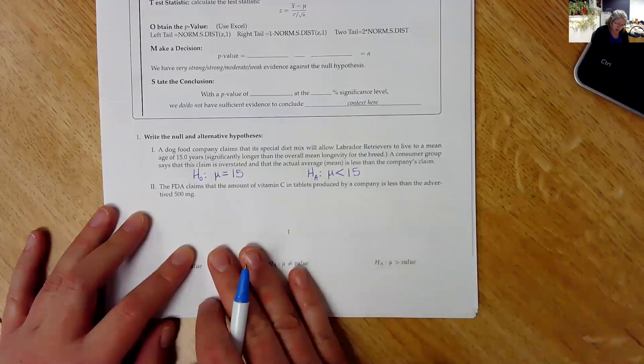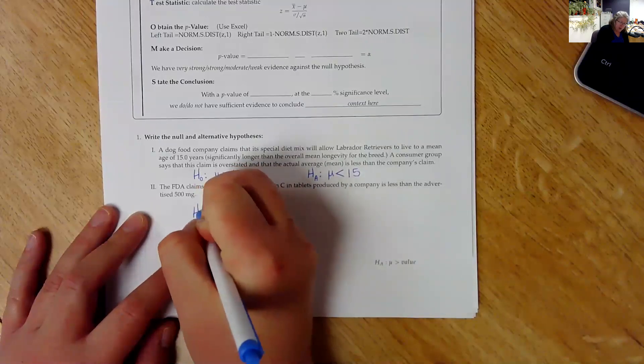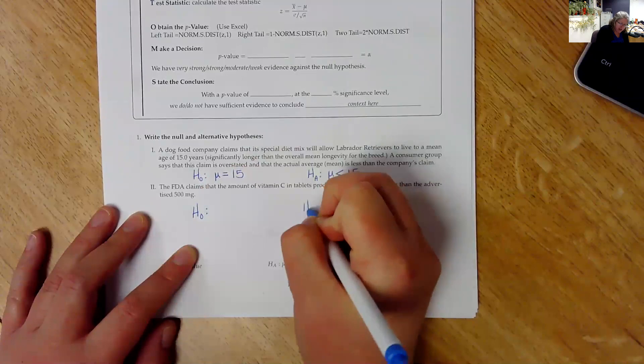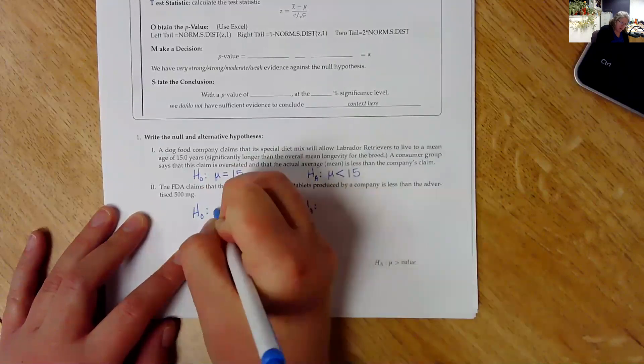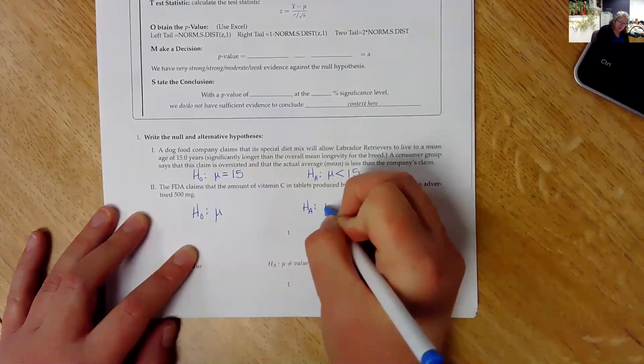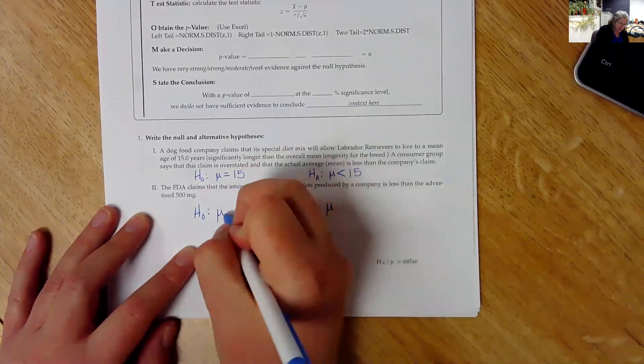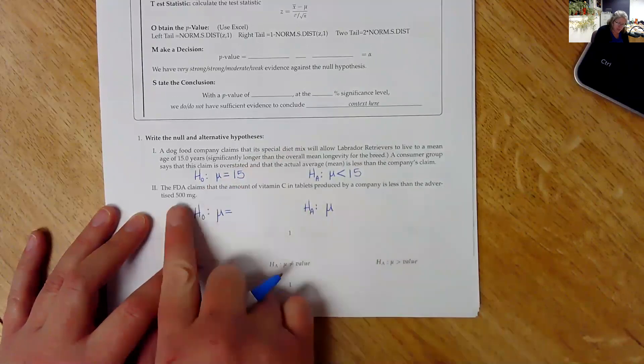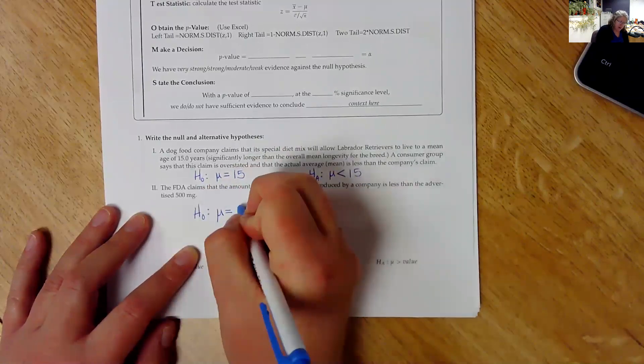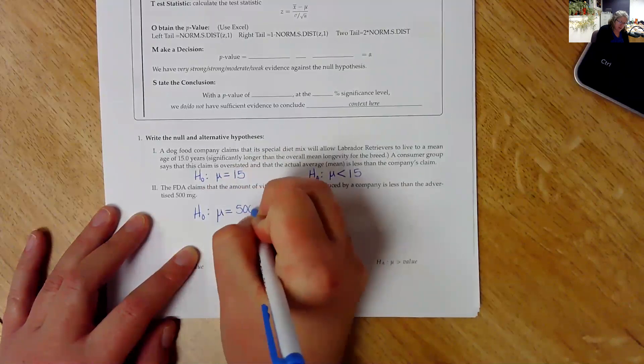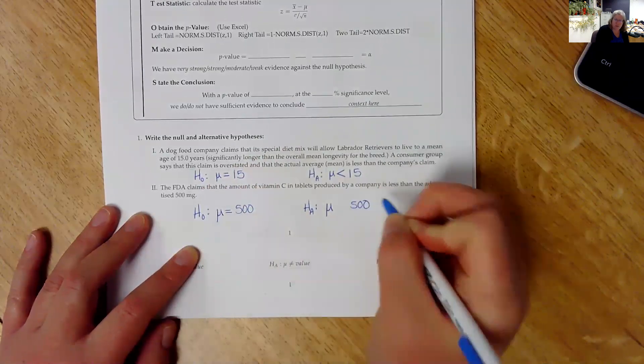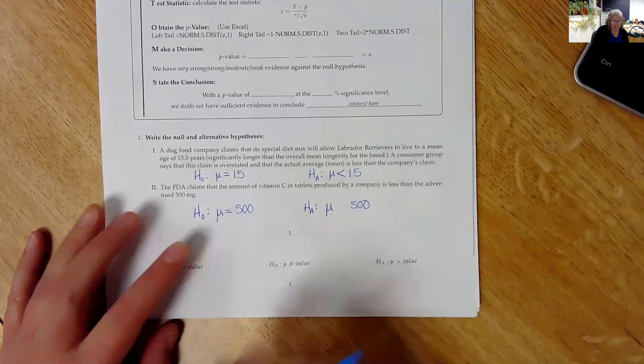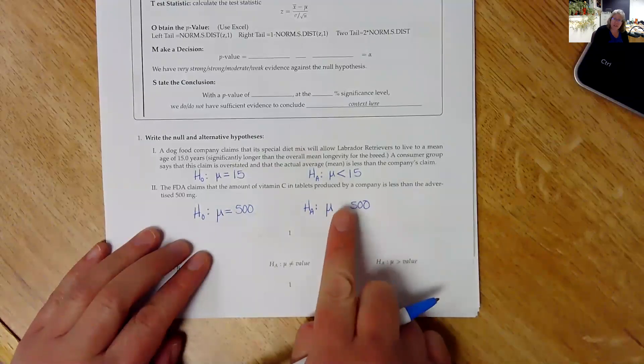The FDA claims that the amount of vitamin C in tablets produced by a company is less than the advertised 500 milligrams. So again, I'm going to put my H0 and my HA. I know that I use mu, my symbol for the population mean for both of those. So the company claims that it's 500 milligrams. So I'll put my null as mu is equal to 500, and I'll put 500 for the alternative as well. It's always the same number for both of these.